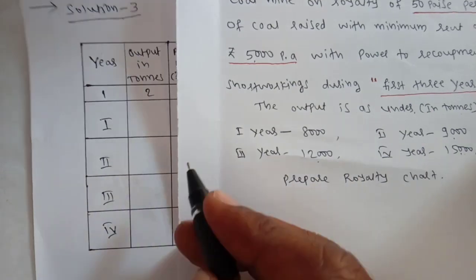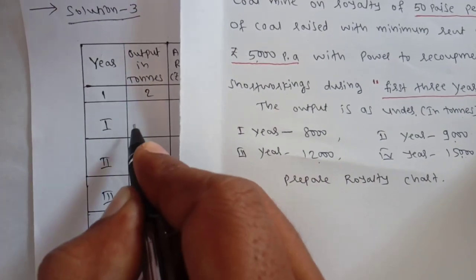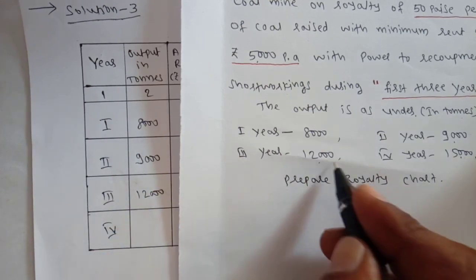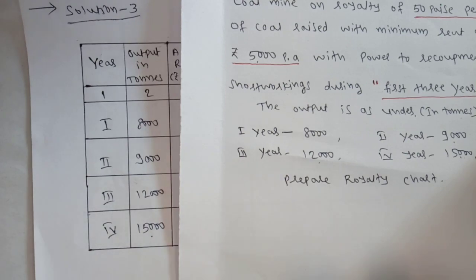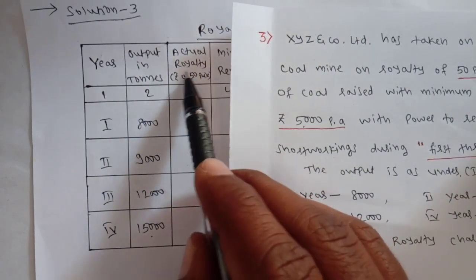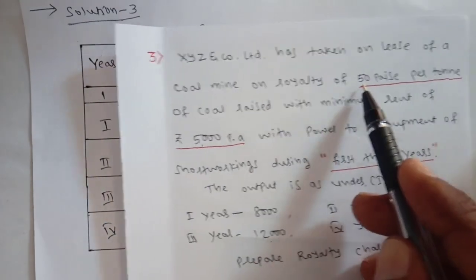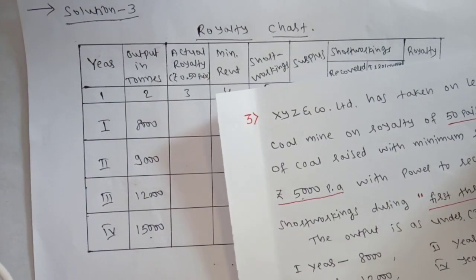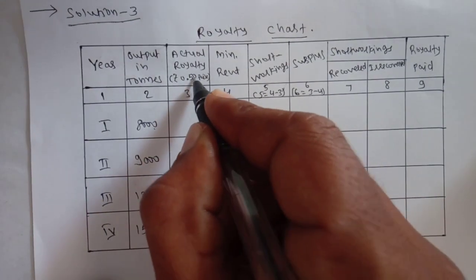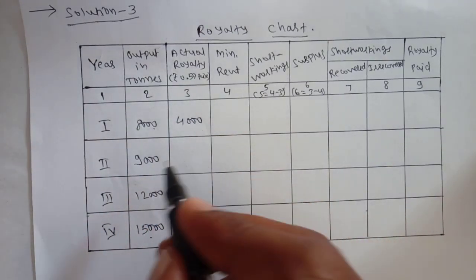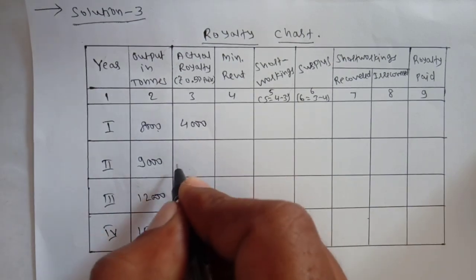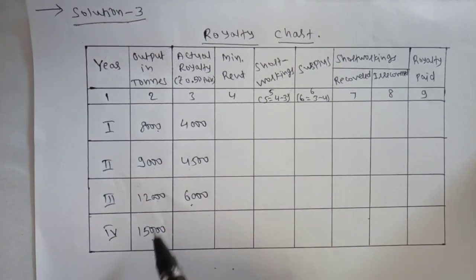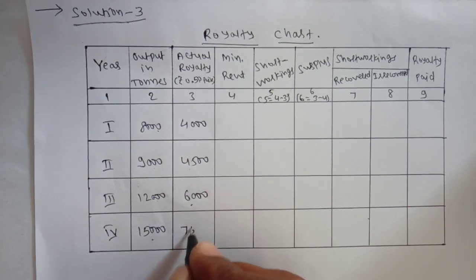The output in tons from the problem: first year is 8,000, second year is 9,000, third year is 12,000, and fourth year is 15,000. The third column is actual royalty at 50 paise per ton. So: 8,000 into 50 paise is 4,000; 9,000 into 50 paise is 4,500; 12,000 into 50 paise is 6,000; and 15,000 into 50 paise is 7,500.